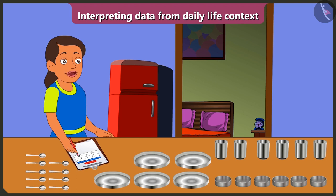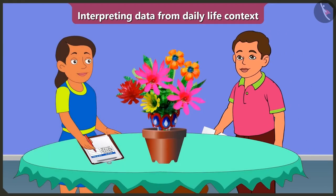Now let's see the second example. Now I will fill this table by counting how many and which color plastic flowers are there in this flower vase.